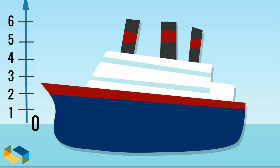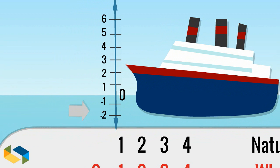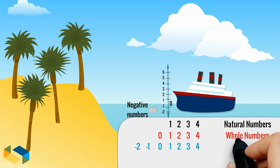Now let's measure the height of the ship. It's six meters above sea level and there are two meters below sea level as well. We show them as negative numbers. These type of numbers are called integers.